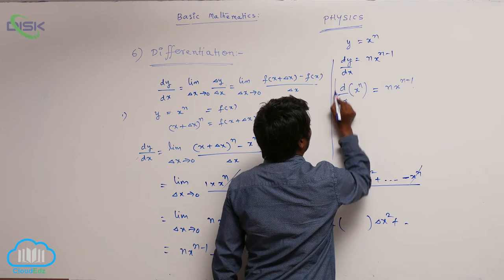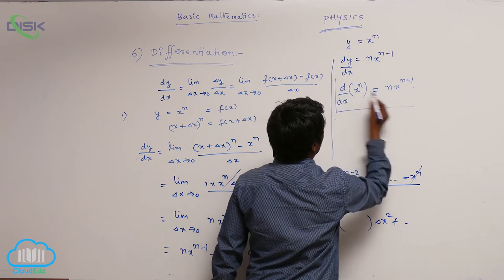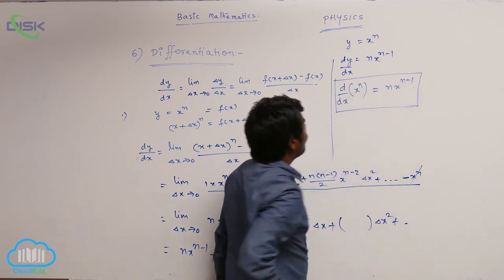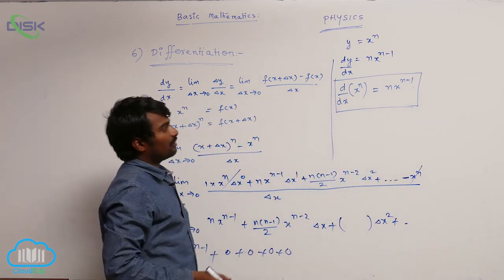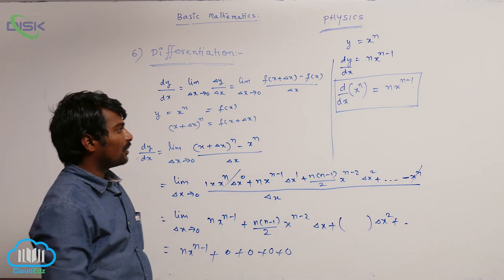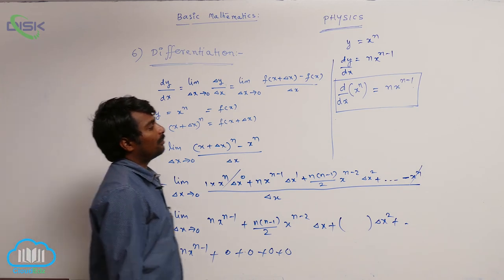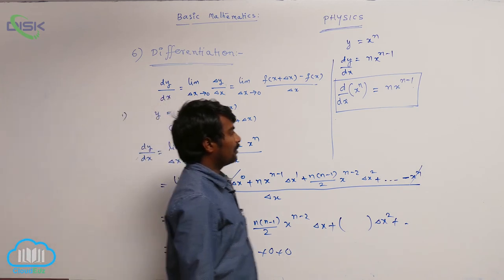Generally we ask students to remember this formula: dy by dx of x power n is equal to n times x power n minus 1.